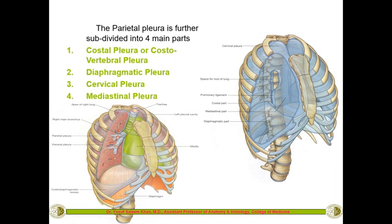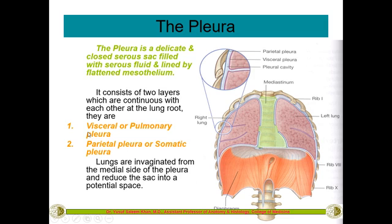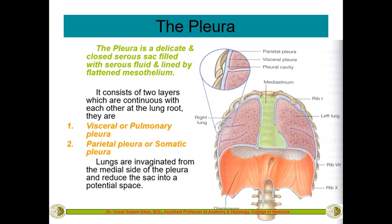The two layers are continuous with each other at the lung root. The layer in contact with the lung is called the visceral layer or pulmonary pleura. The other layer in contact with the chest wall is called the parietal pleura or somatic pleura — 'soma' means body. It is called the somatic or parietal layer because it is in contact with the body wall.